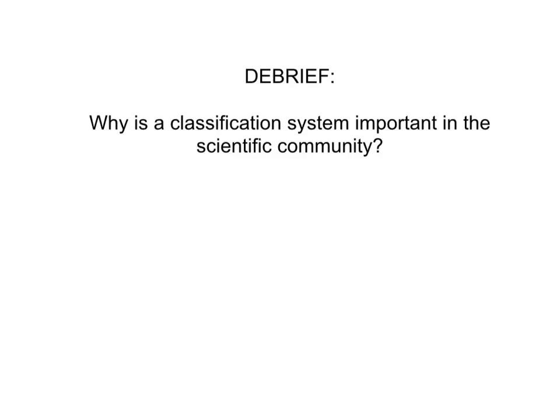We're done with the video, and here is your debrief: Why is a classification system important in the scientific community? Think about the different levels — domain, kingdom, phylum, class, order, family, genus, species — and think about why we need a system like this and why it might be helpful. If you don't know the answer to the debrief, make sure you give it your best shot and then talk to your teacher tomorrow. Have a good one, y'all.